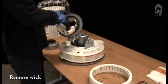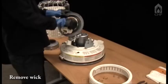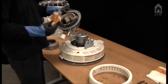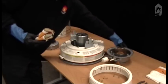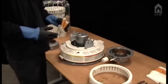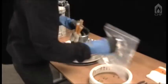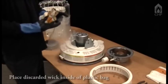Remove the wick by folding it to the inside. Place the discarded wick inside the plastic bag and seal it.